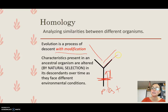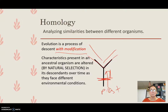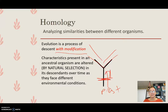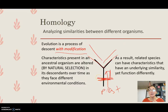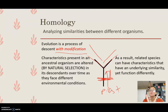Once descendants are geographically or reproductively isolated, they face different environmental conditions. Think about lions and tigers — they're on different continents, one in grasslands and one in forests. They have different selective pressures leading to different cases of natural selection, causing the species to evolve and become different even though they have a common ancestry. As a result, related species can have characteristics with underlying similarity yet function differently.